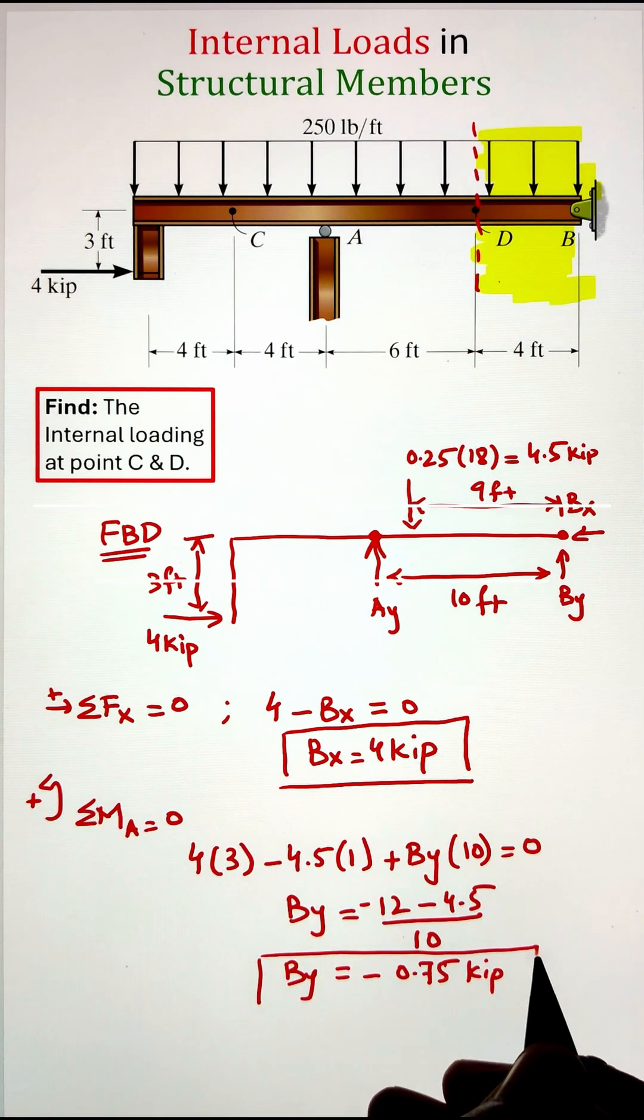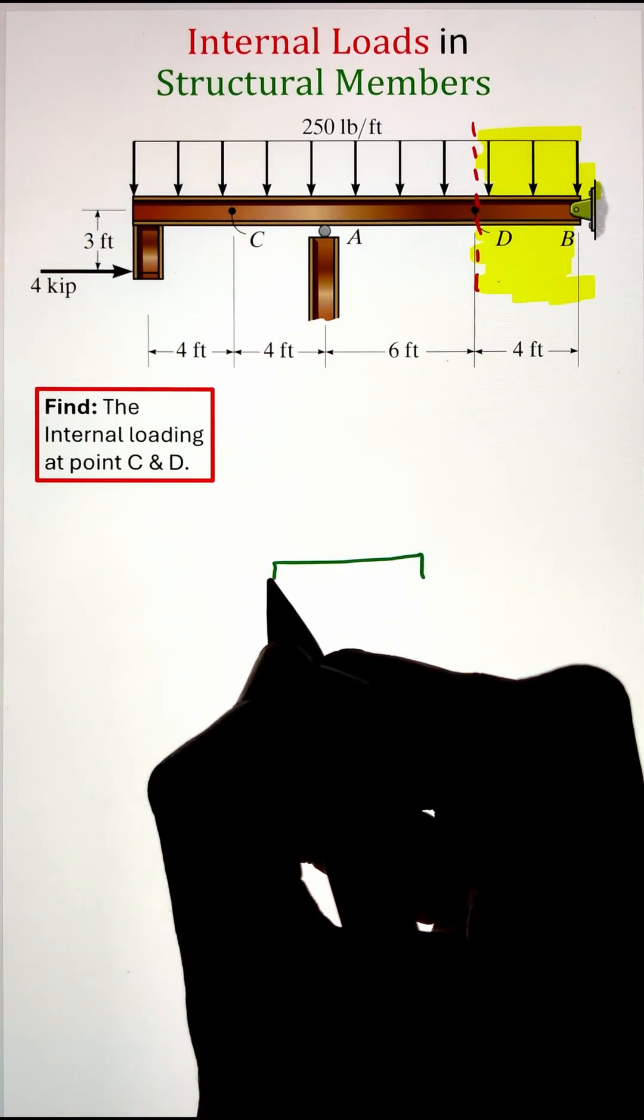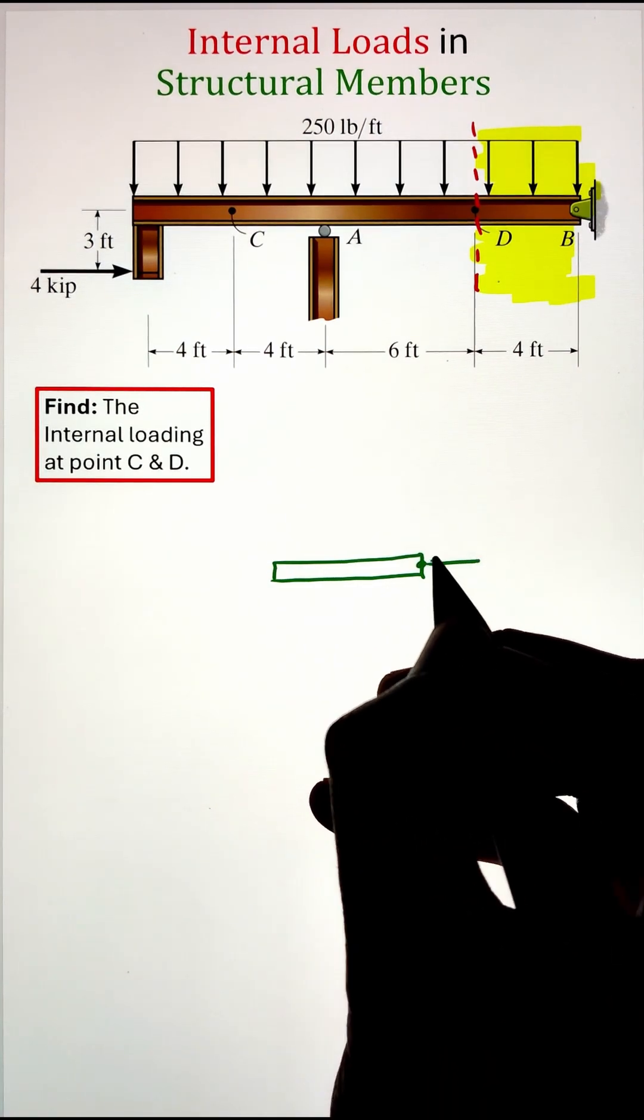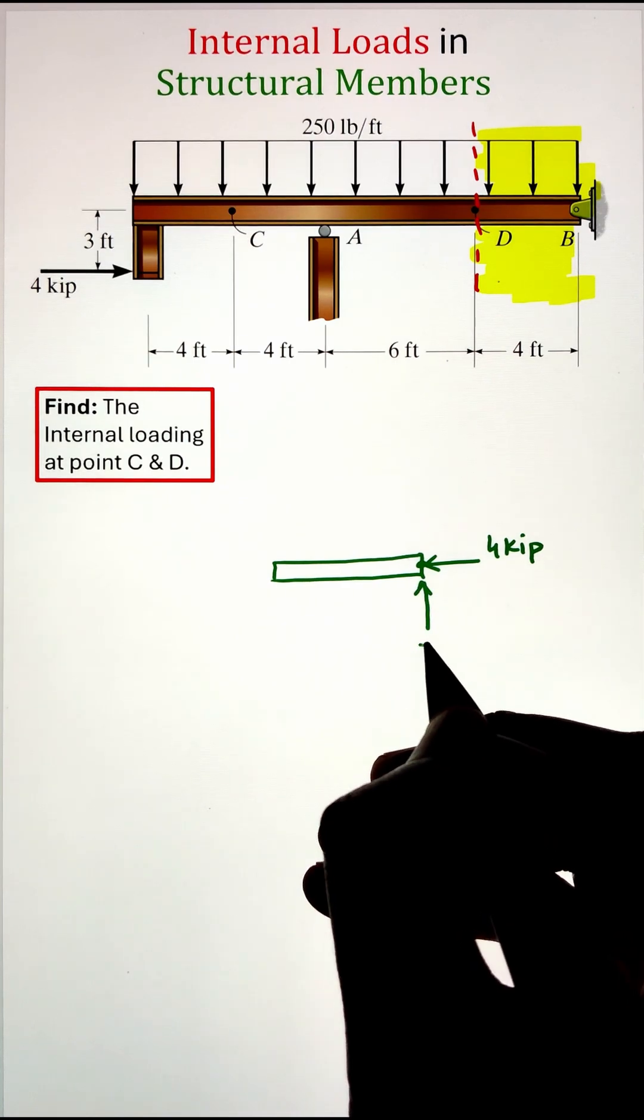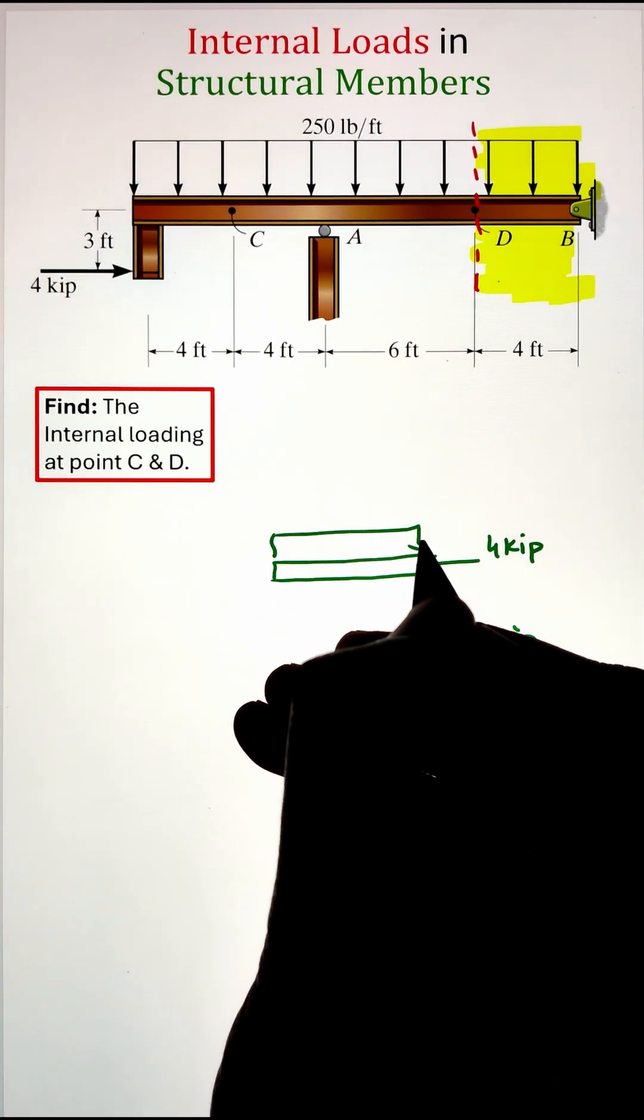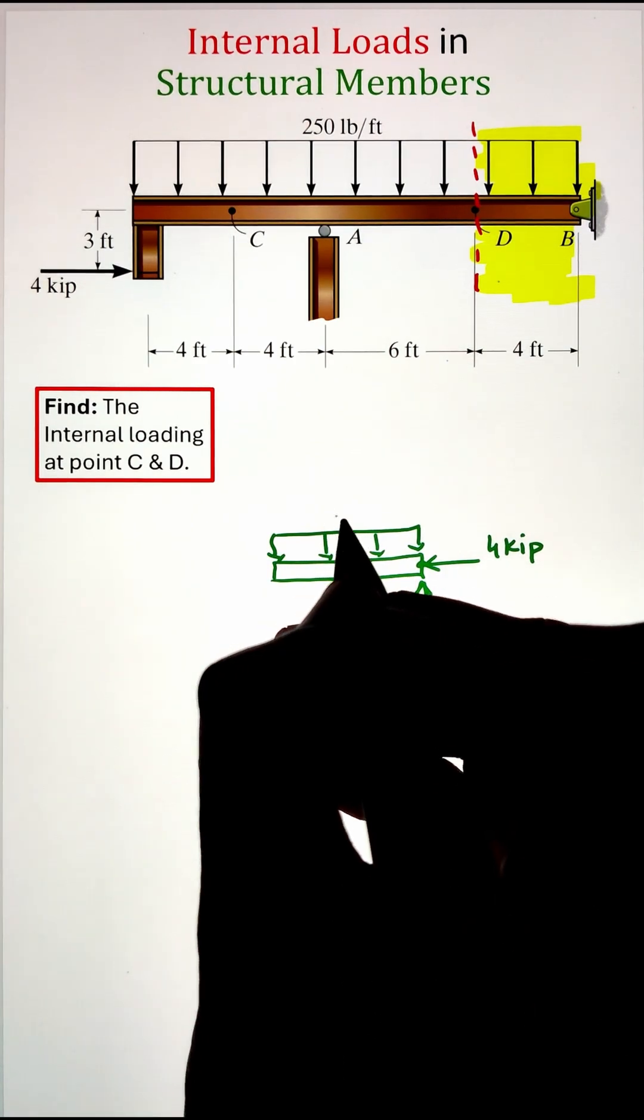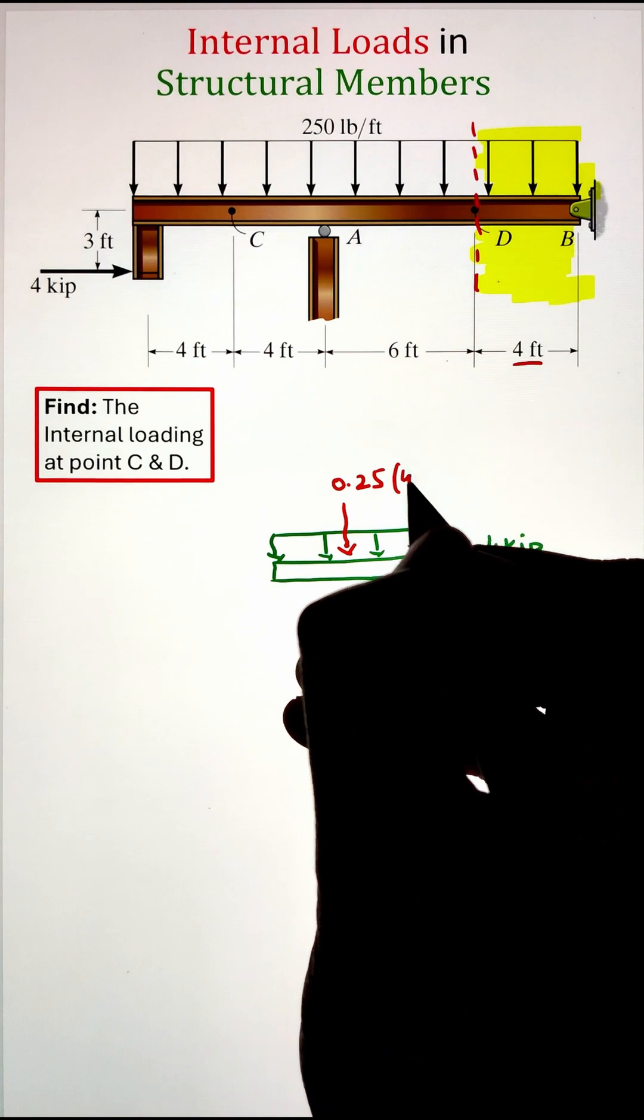Now once we have identified the support reactions, let's go ahead and draw the free body diagram of our section and solve for the internal loads. Since BX was 4 kilopounds to the left and BY was negative 0.75 kilopounds going upward, now the distributive loading can be converted into a point load. Since we have a span of 4 feet, that 250 pounds per foot equals 1 kilopound.